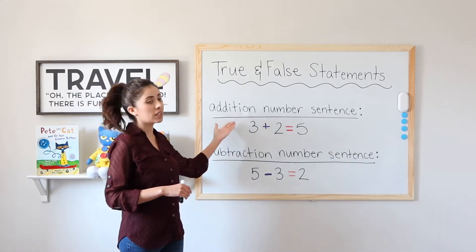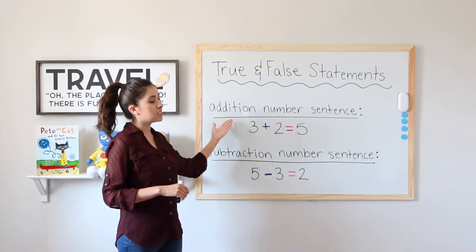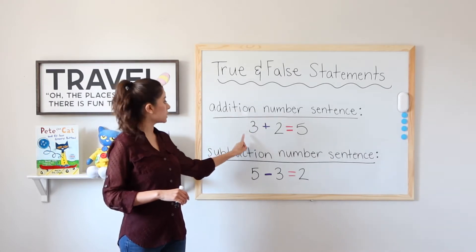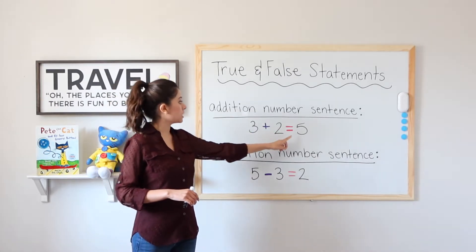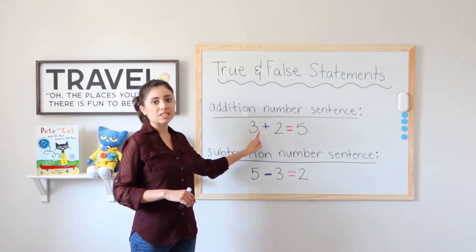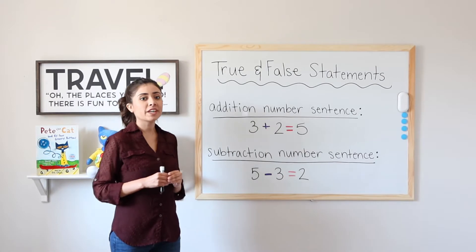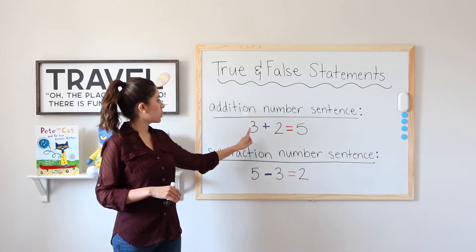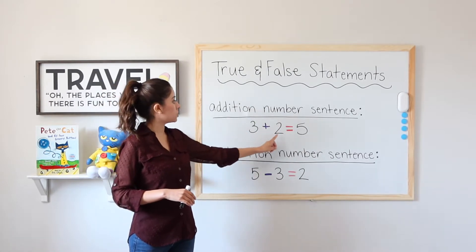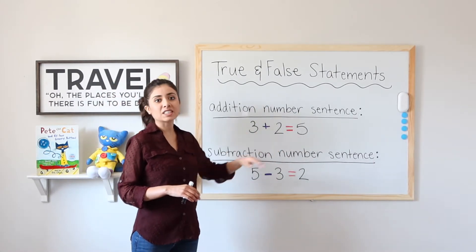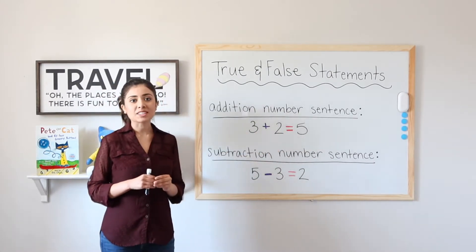Addition number sentence. An addition number sentence is an expression that uses numbers, a plus sign, and an equal sign. Here I have 3 plus 2 equals 5. This is an addition number sentence.